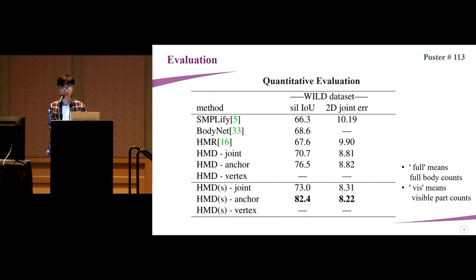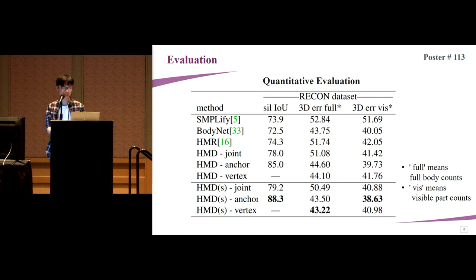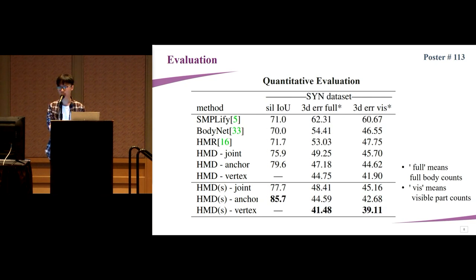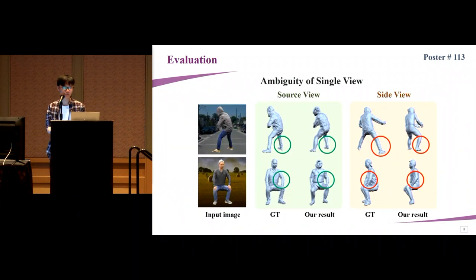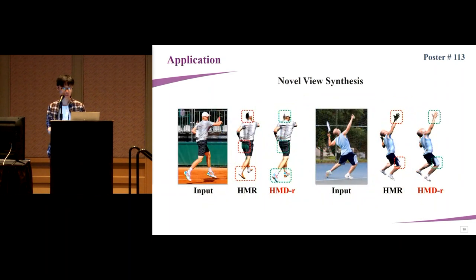Quantitatively, our method leads in 2D metrics like mask IOU and 2D joint error, and outperforms methods using parametric models and volumetric prediction in 3D surface error. Our HMD framework refines the human mesh from coarse to fine. From the side view, inherent pose and shape ambiguities cannot be resolved from a single viewpoint, which is the main source of 3D surface error. Our method can also be used for novel view synthesis by mapping the image to the mesh as texture.